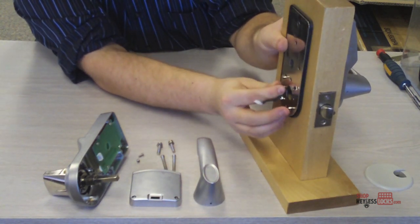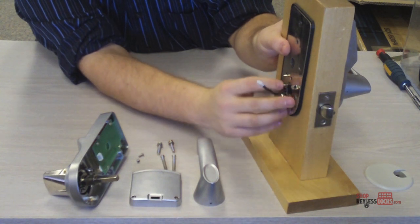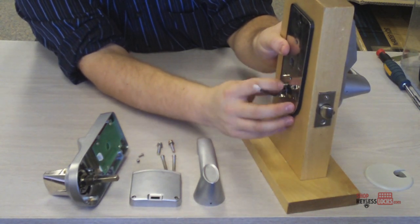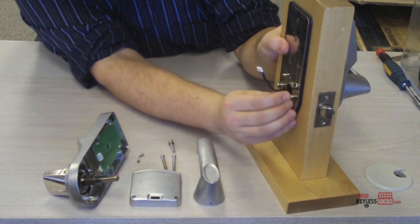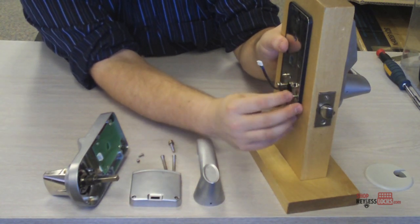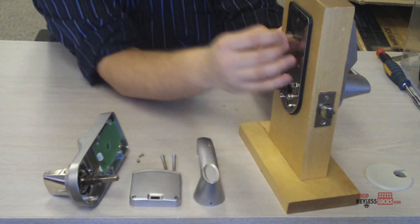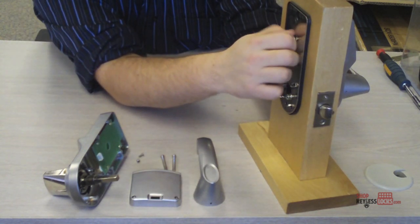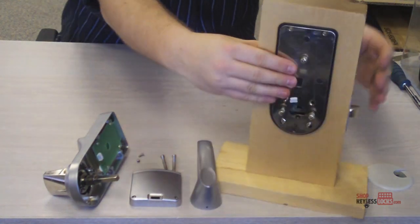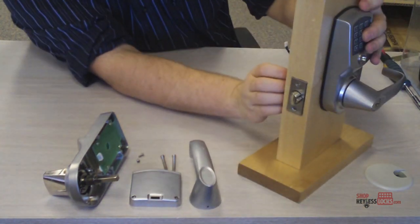Take one of the three shorter screws and just start them in so that they're loose but holding things together, just so we can then make sure the lock is aligned properly.